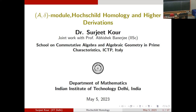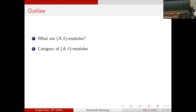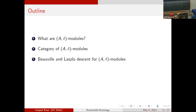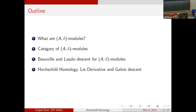Let me start with this question: what is an A-delta module? I'll talk about the category of A-delta modules, the Vavilov-Laszlo descent for A-delta modules, Hochschild homology, and Galois descent on the Hochschild homology when you define the A-derivation on its homology groups. So let us start with the A-delta modules.